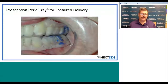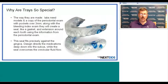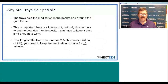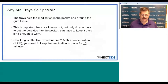Here's what it looks like when the patient is wearing the tray. The lab needs models and a copy of the periodontal exam — a very accurate detailed impression with pockets over three millimeters, along with a bleeding index exam — to create a seal-like gasket and extension around each tooth. The seal fits precisely against the gingiva, holding the material there to fight the crevicular fluid flow. It's important because we not only have to get the peroxide into the pocket, we have to keep it there long enough — about 10 minutes minimum. I always tell patients to wear it 15 minutes, because if you tell them 10 minutes, they'll do seven or eight. If you tell them 15, they'll do at least 10 to 14 minutes.